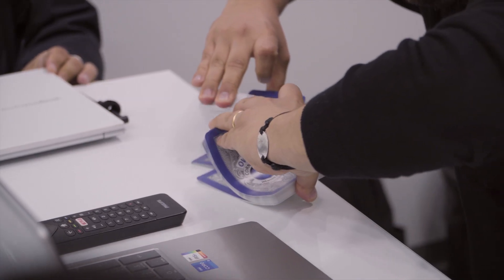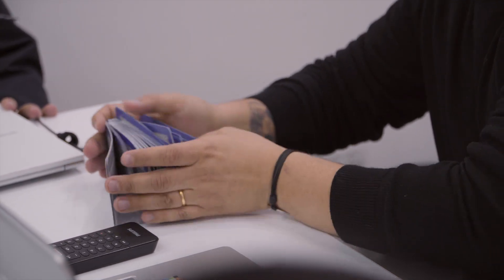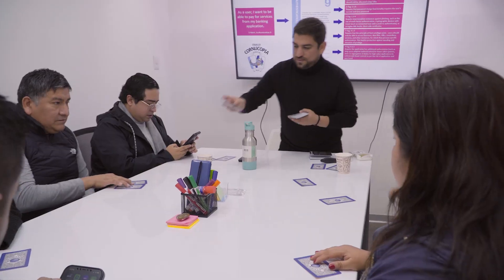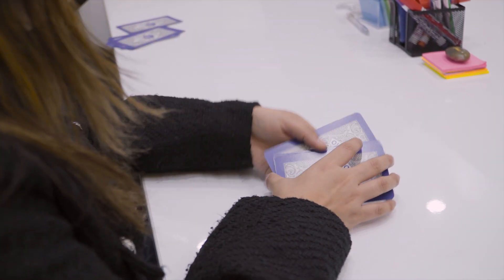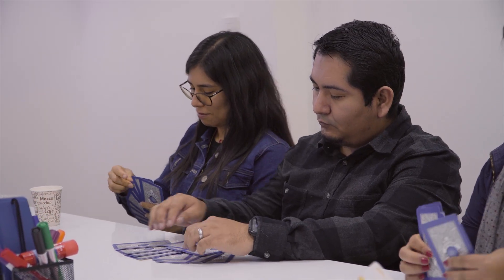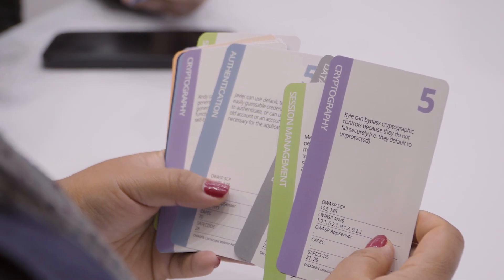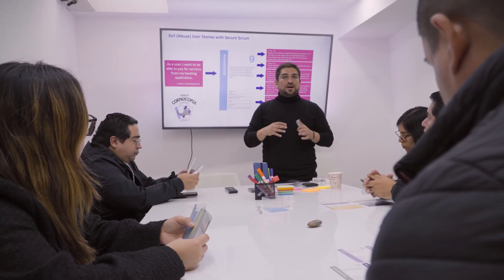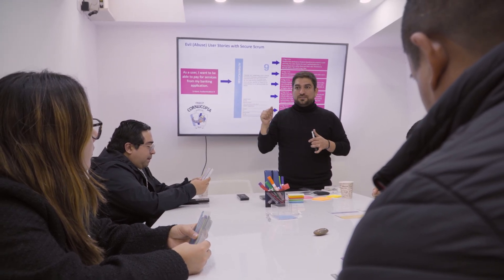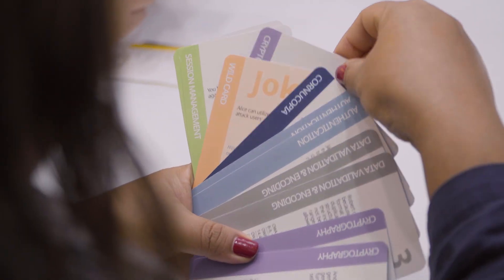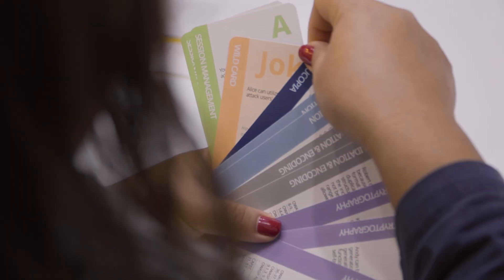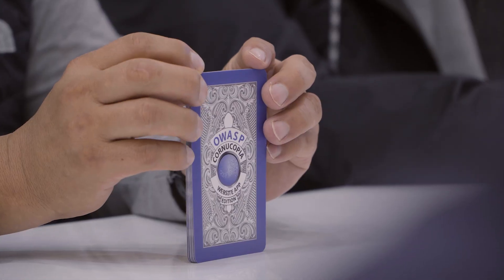We begin by shuffling the cards and dealing them to all players. Ideally, we should deal everyone the same number of each of the Cornucopia domains. Once the cards have been dealt to all players, the game begins. In our case, we play with a facilitator who can explain the rules of the game and, during the game, also explain any cards that are more difficult to understand or might generate controversy. Each player arranges their cards and carefully reads each one before choosing which one they will explain to the other players.